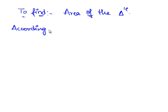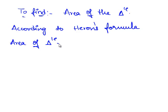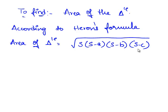Now we need to find area of the triangle. According to Heron's formula, area of the triangle is equal to square root of S times S minus A times S minus B times S minus C.